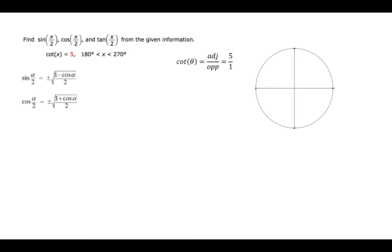Recall that the cotangent is found by the ratio adjacent over opposite, and if the cotangent is 5, then we can write that ratio as 5 over 1. So if we place the terminal side of the angle in standard position, it would exist in the third quadrant, because we are told that its measure is between 180 degrees and 270 degrees. We'll call this angle theta. The point where the terminal side meets the circle would have coordinates negative 5, negative 1, since it's in the third quadrant, and the x and y coordinates are both negative in that quadrant.